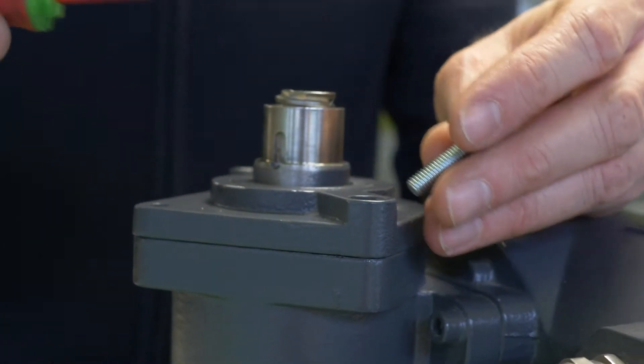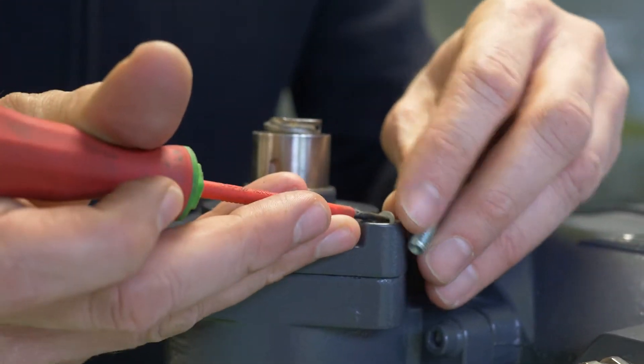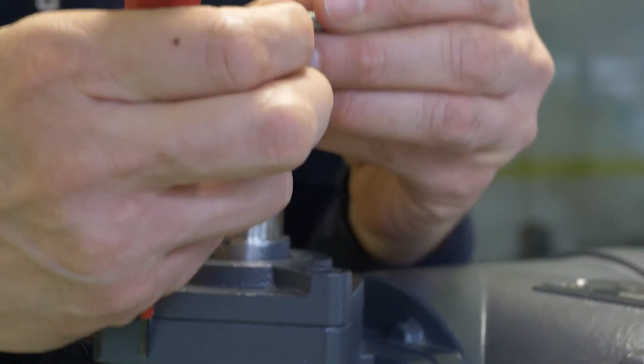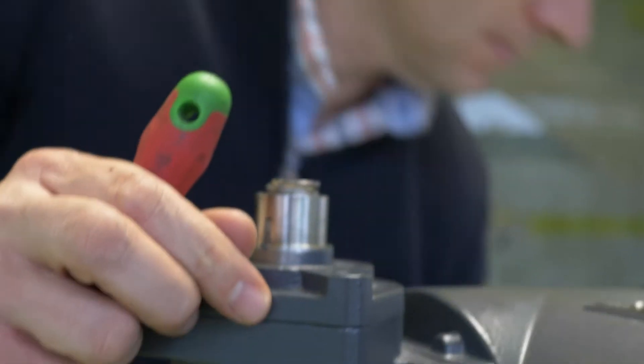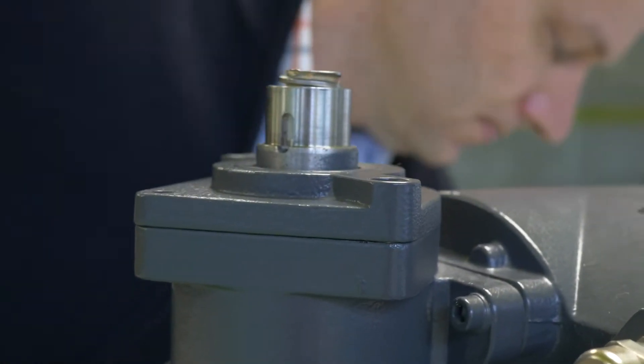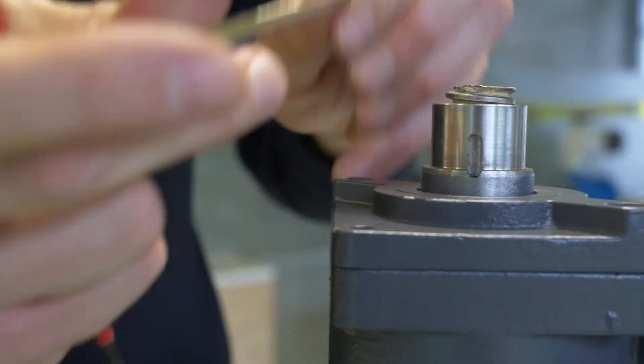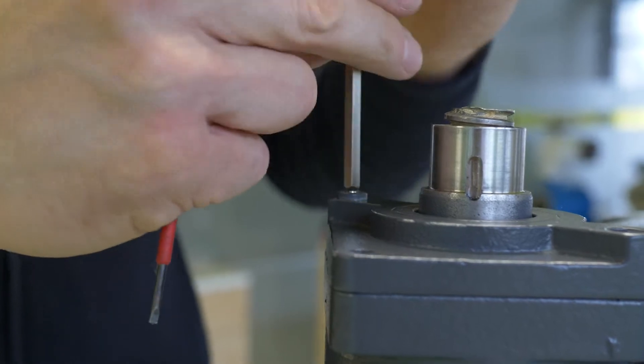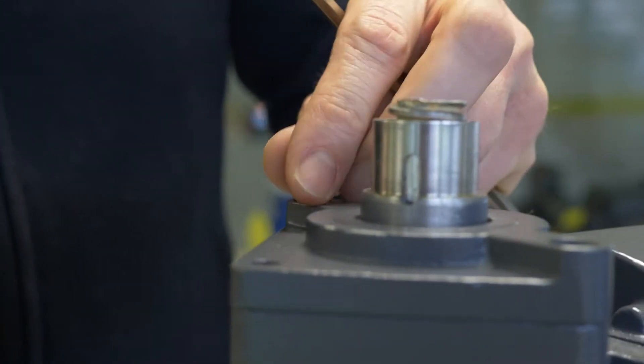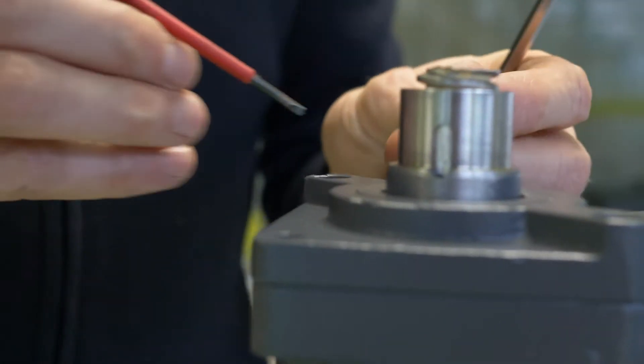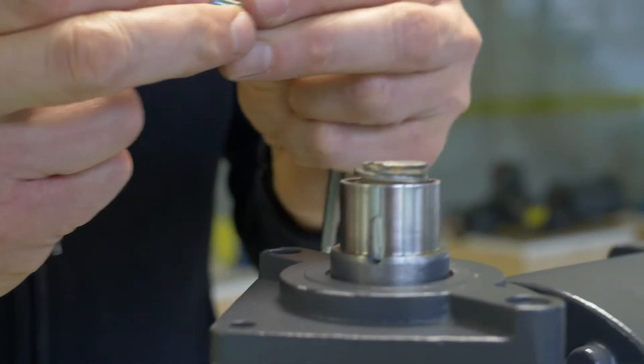There is also a washer that you should be careful not to lose. So now we loosen the second screw also. We have here a washer which we give to the screw.